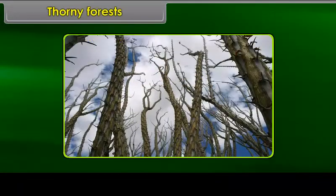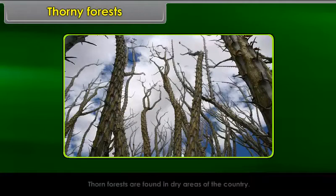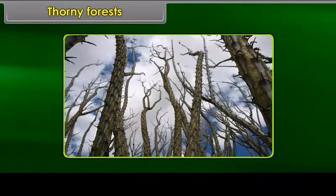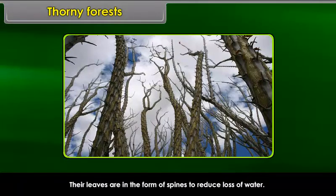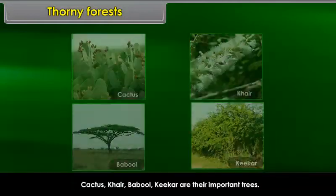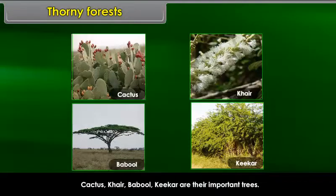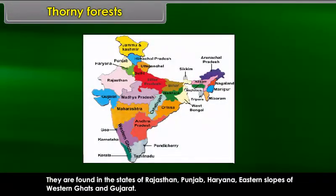Thorn forests are found in the dry areas of the country. Their leaves are in the form of spines to reduce loss of water. Cactus, khair, babool, and kekar are their important trees. They are found in the states of Rajasthan, Punjab, Haryana, eastern slopes of the Western Ghats, and Gujarat.